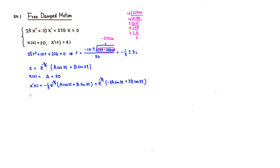Then we plug in t equals 0. x prime of 0: plugging in 0 gives negative 1 over 5 times a — and we know a is 20, so that's negative 1 over 5 times 20. Plus e to the 0 is 1; sine of 0 is 0, so that term goes away; leaving 3b times 1, which is 3b.